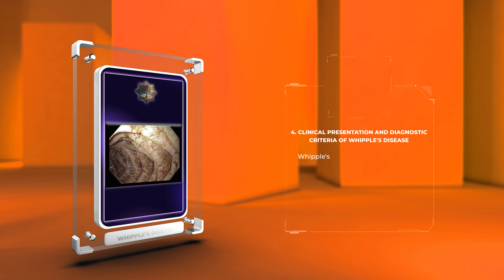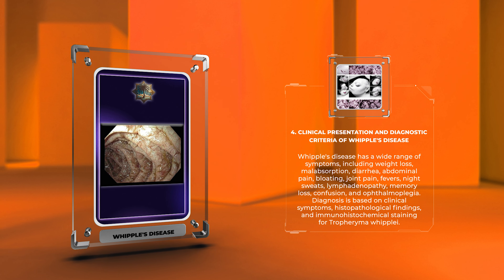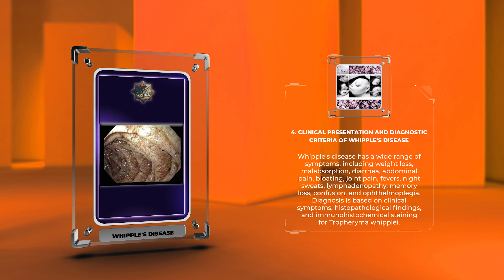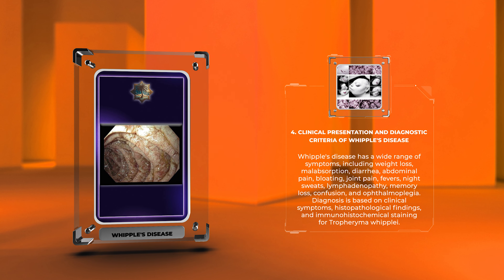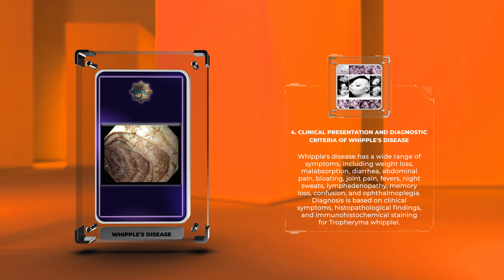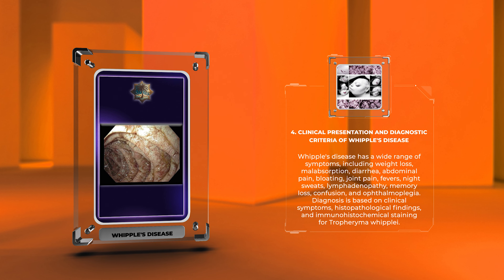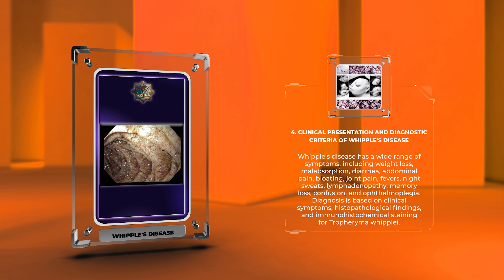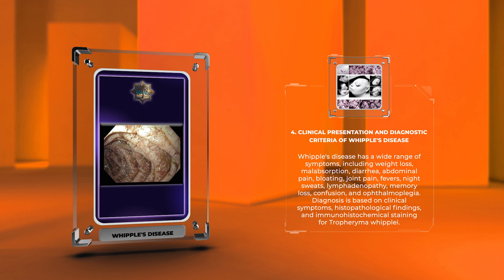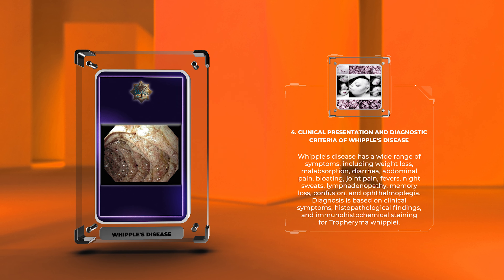Whipple's disease has a wide range of symptoms, including weight loss, malabsorption, diarrhea, abdominal pain, bloating, joint pain, fevers, night sweats, lymphadenopathy, memory loss, confusion, and ophthalmoplegia. Diagnosis is based on clinical symptoms, histopathological findings, and immunohistochemical staining for Tropheryma whipplei.